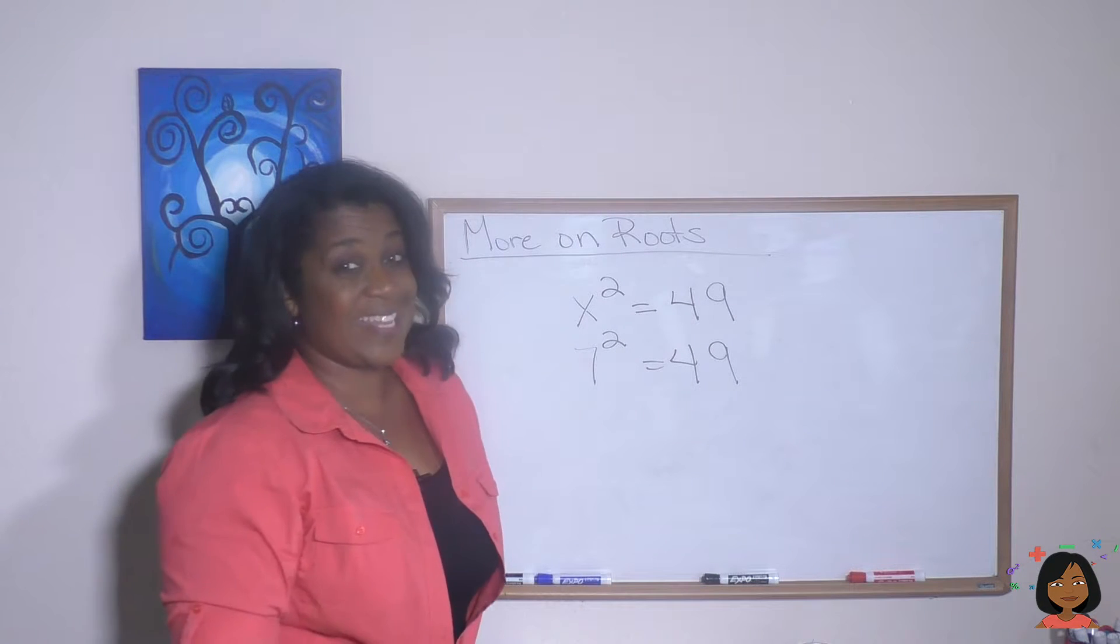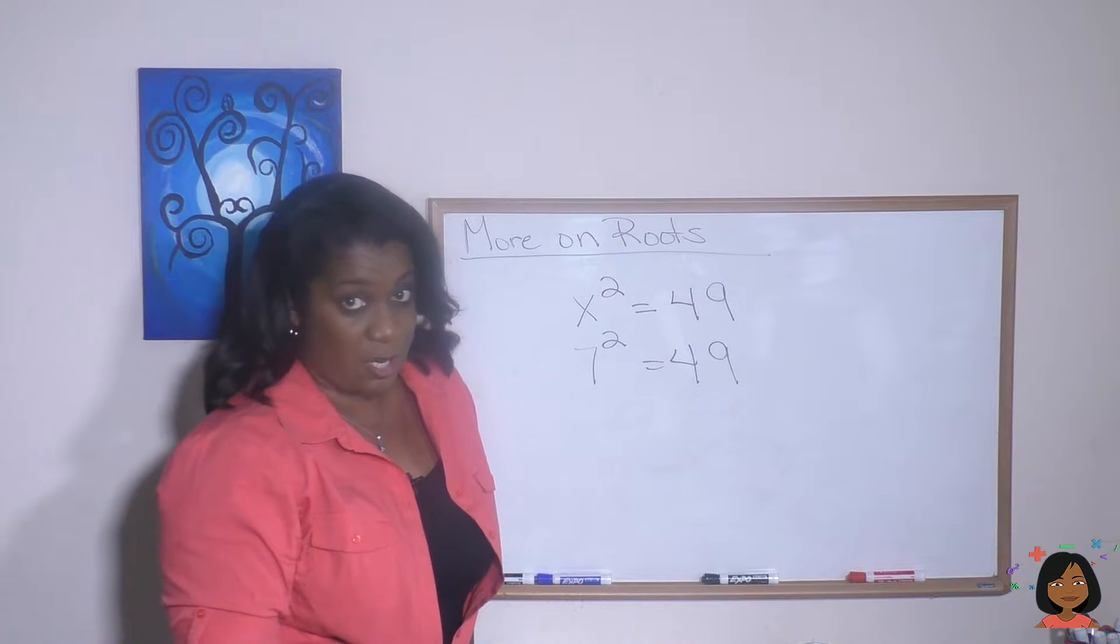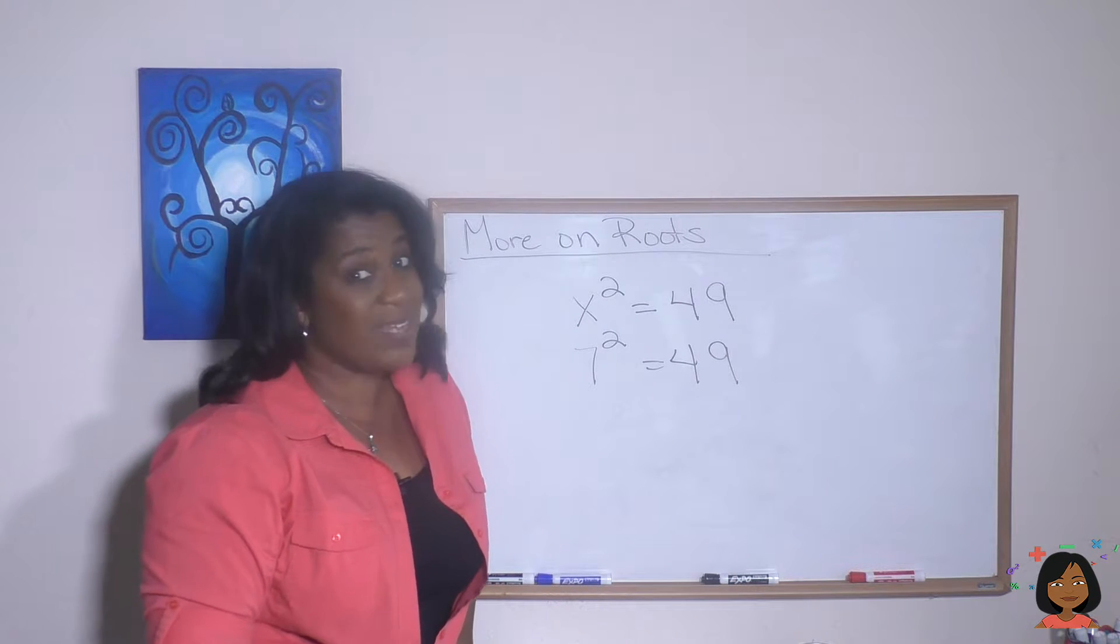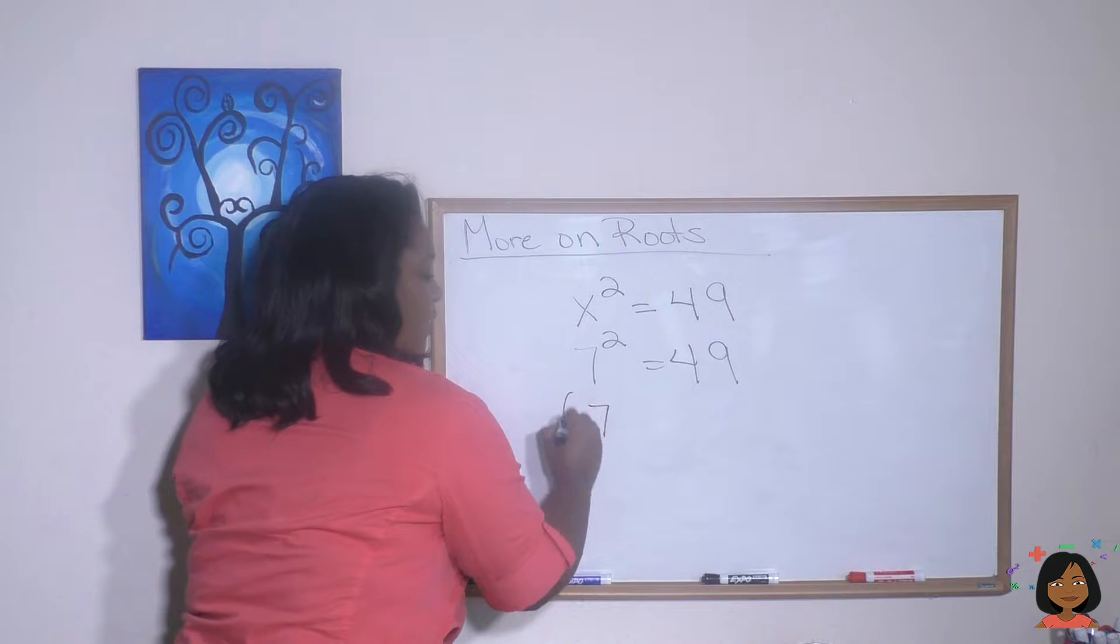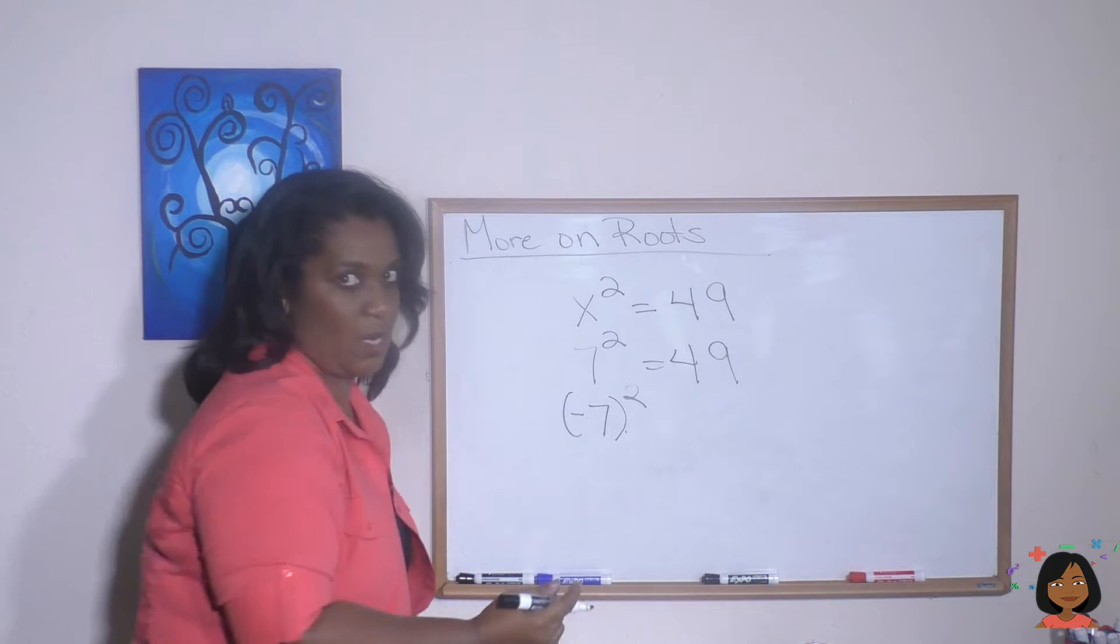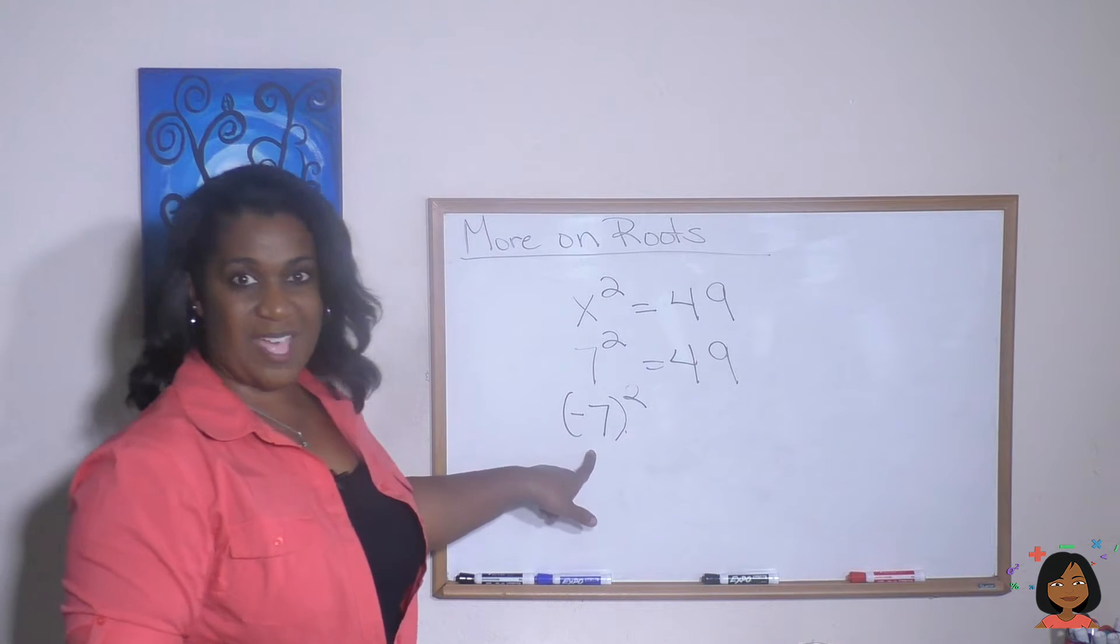But guess what? There is another number, an integer, that also this is true for. What about negative 7? Negative 7 squared, tried to make my parenthesis a 2. I don't know what happened there. Negative 7 squared.